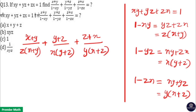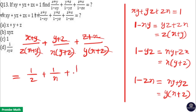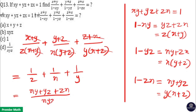Now, (x + y) cancels in the first term, (y + z) cancels in the second term, and (z + x) cancels in the third term. The remaining expression is 1/z + 1/x + 1/y.